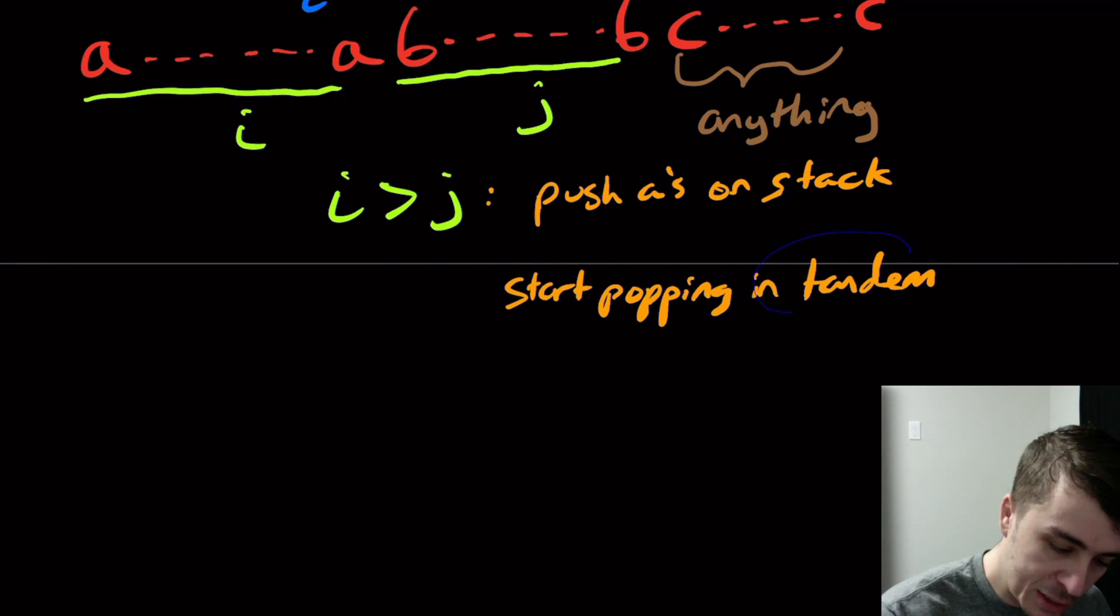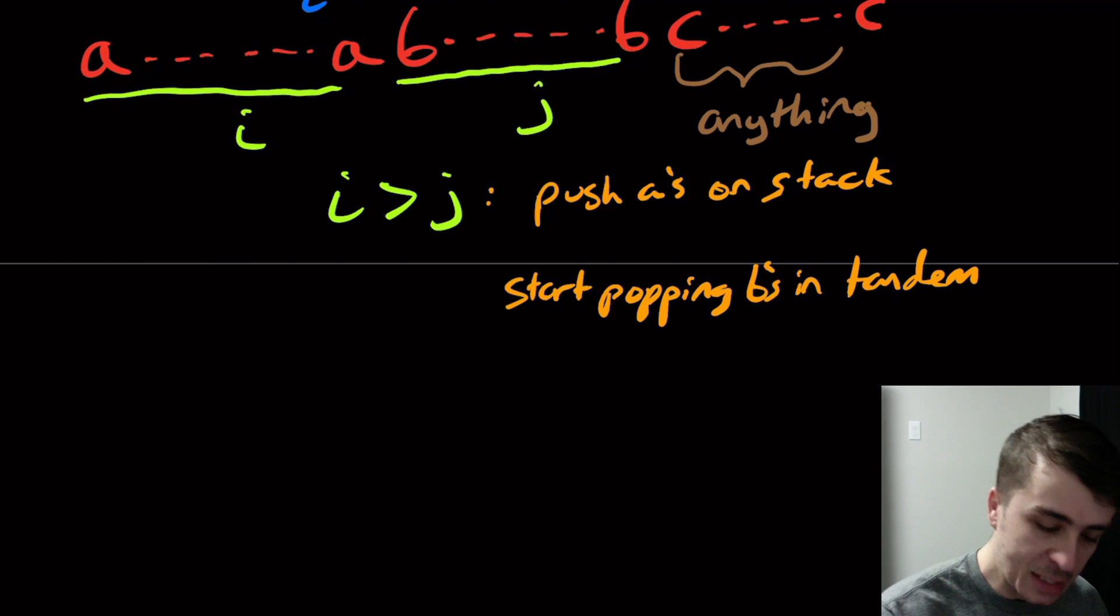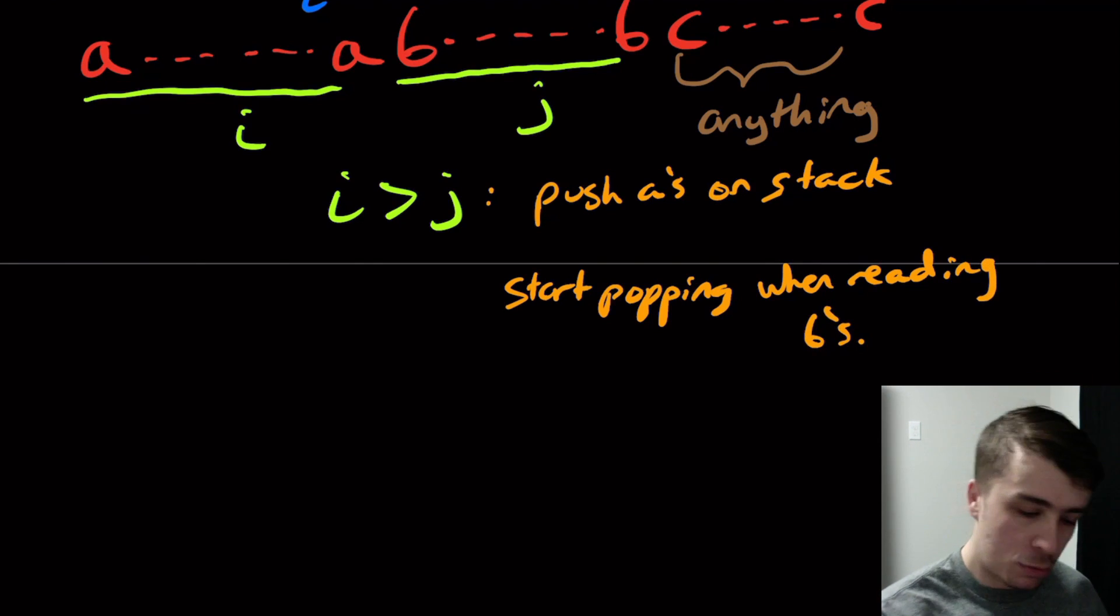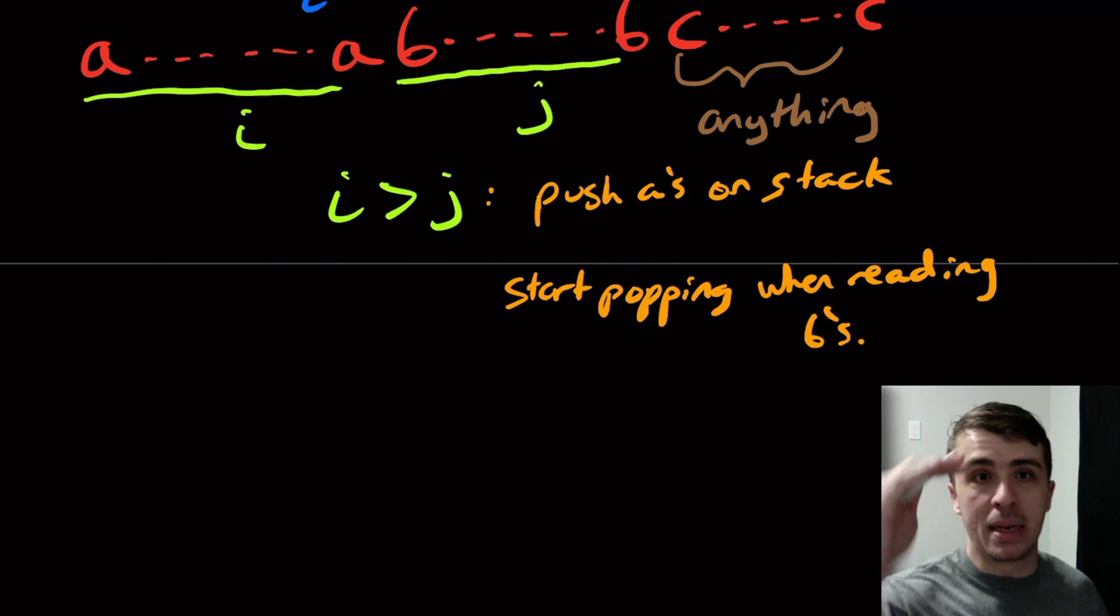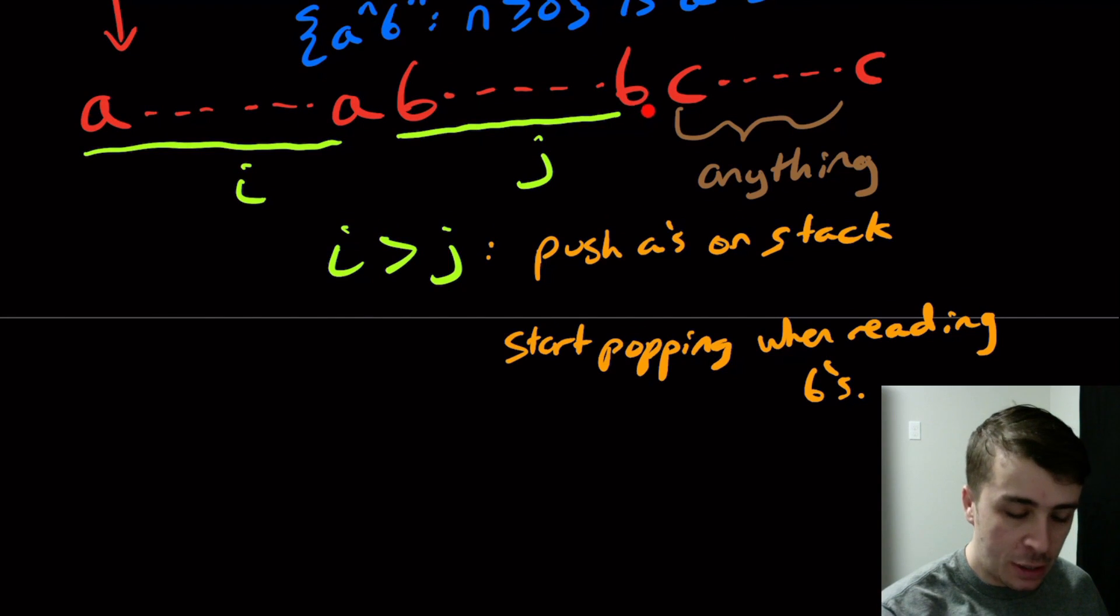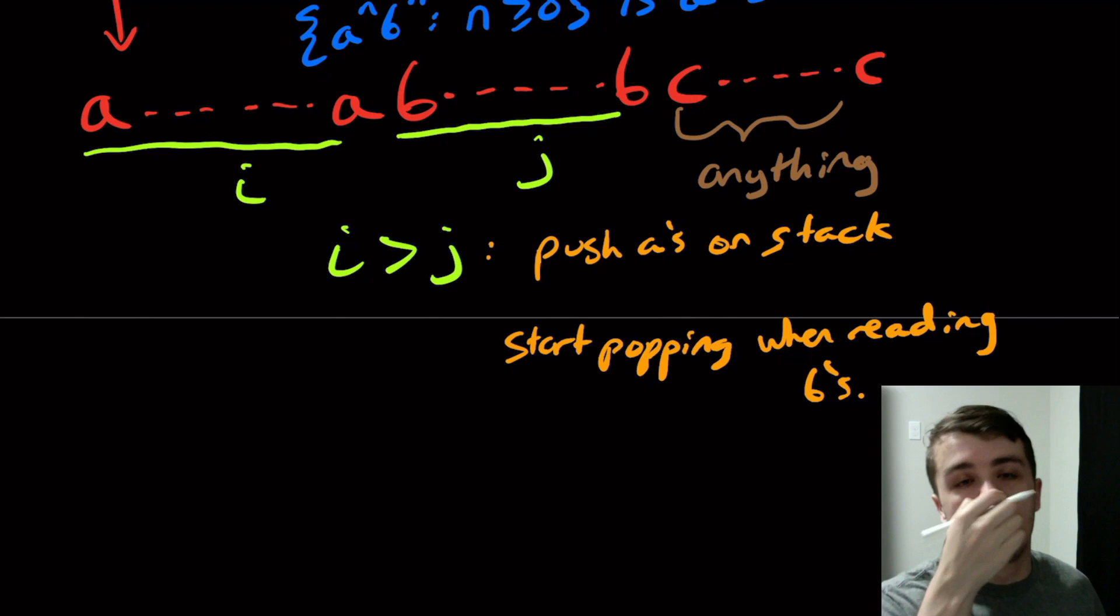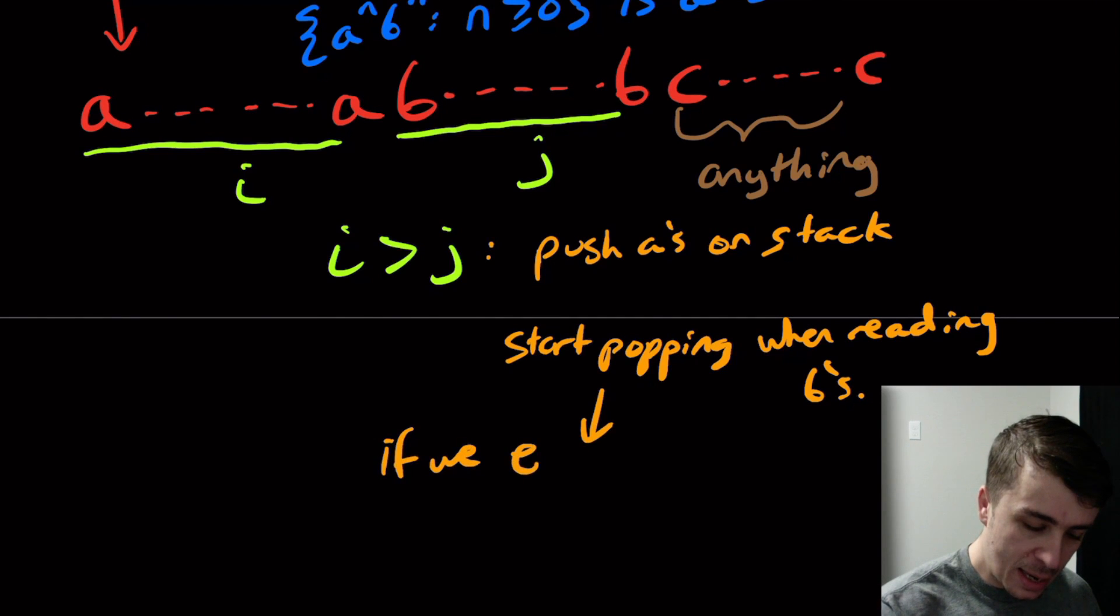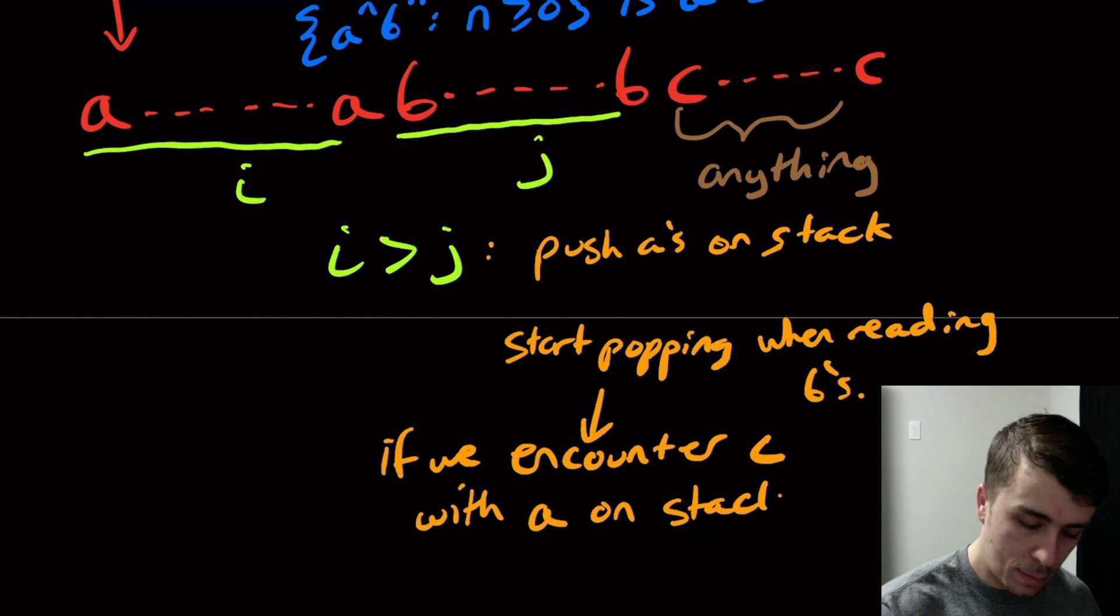So start popping when reading B's. So if that's the case, then what will happen is we'll run out of B's onto the stack. And what do we do then? So we're right here. We're finished reading the B's. We're starting to read a C, but there's an A on the stack. Then what will happen is if that's the case, then we will transition to that accept state. Remember that we can assume that the DPDA has exactly one accept state. So if this is the case, so if we encounter a C with A on the stack, go to Q accept.